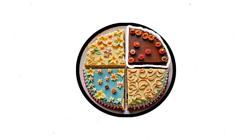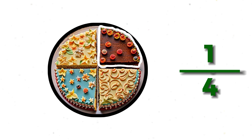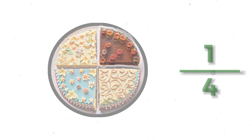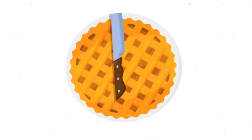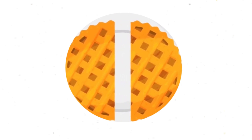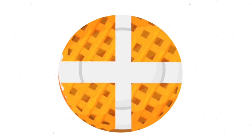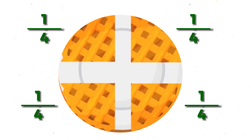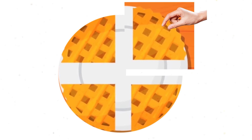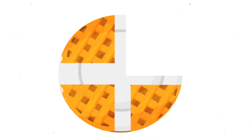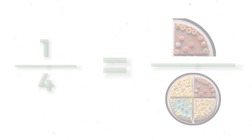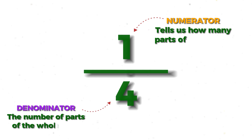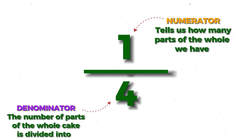Four is the denominator, showing the whole is divided into four equal parts. Let's use this cake to show how fractions work. The cake has been divided into four equal-sized slices. Each slice of the cake is a quarter of the whole cake. I just took one quarter of the whole cake. In maths, we write a fraction as the number of parts we have — the numerator — over the total number of parts — the denominator.